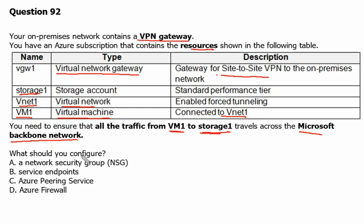Should you configure a network security group? Should you configure a service endpoint? Should you configure Azure peering service? Or should you configure Azure Firewall?